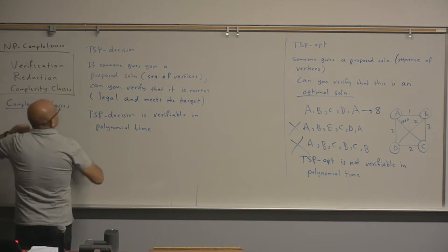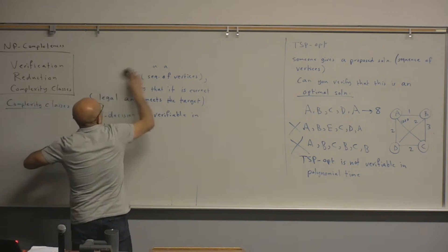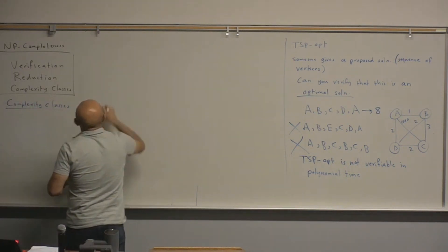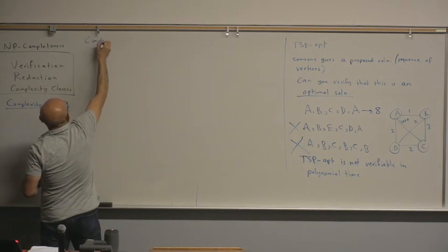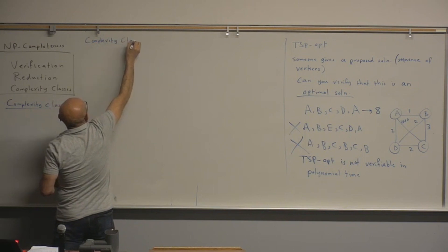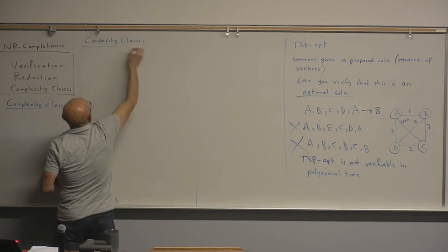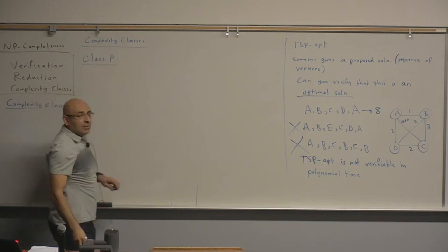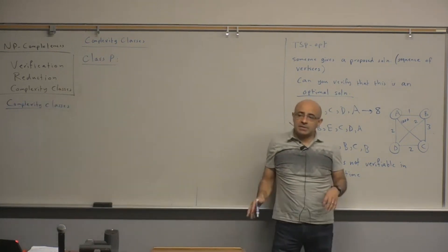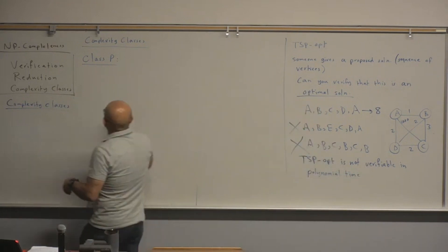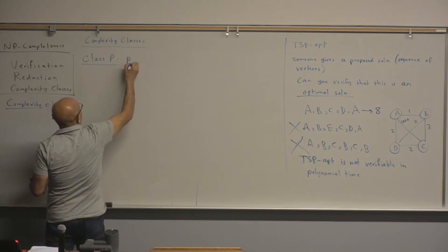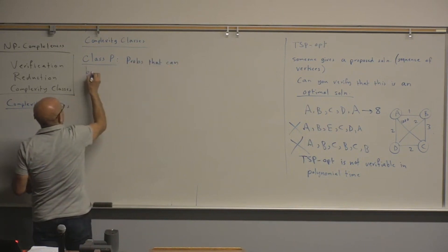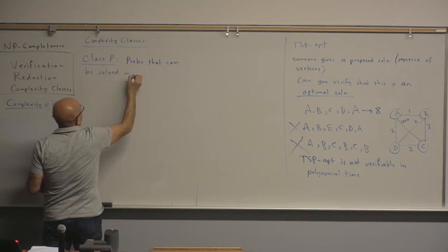Complexity classes. We have class P. Class P is easy — that's the set of problems that can be solved in polynomial time.